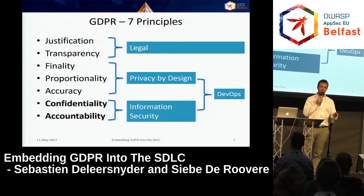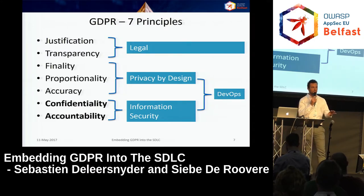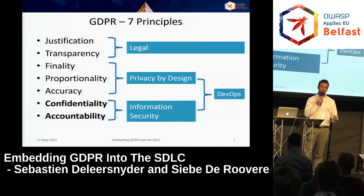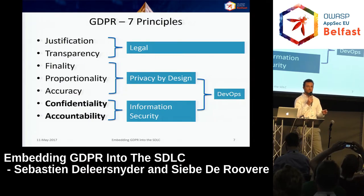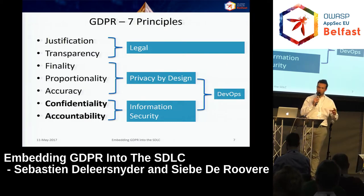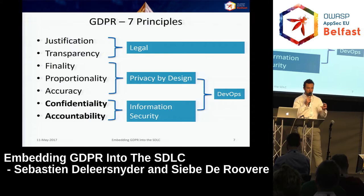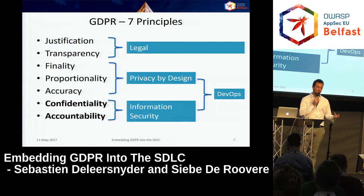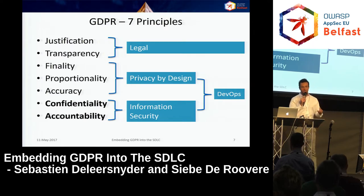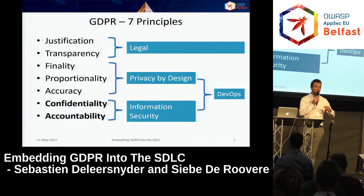If there's one thing you should know about the GDPR, it's this: the GDPR has seven principles which must be followed in order to process personal data legally. If you do not abide by one of these seven principles, you're processing personal data in an unlawful manner and should stop. Some of these principles are managed by a legal department, such as the justification and transparency principles, but other principles are directly related to application development and security.